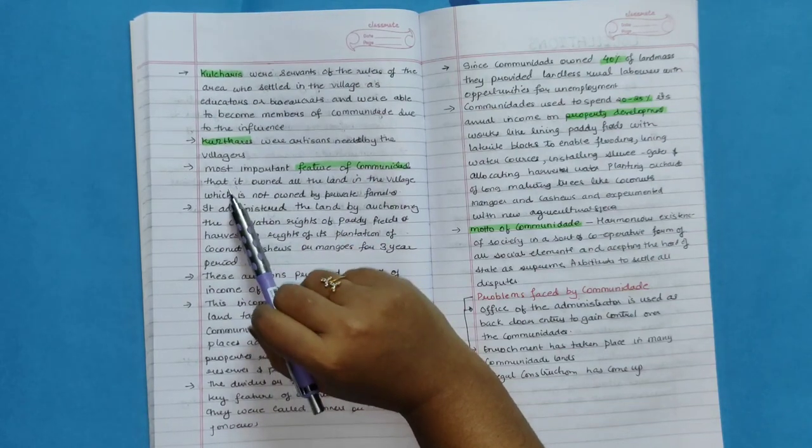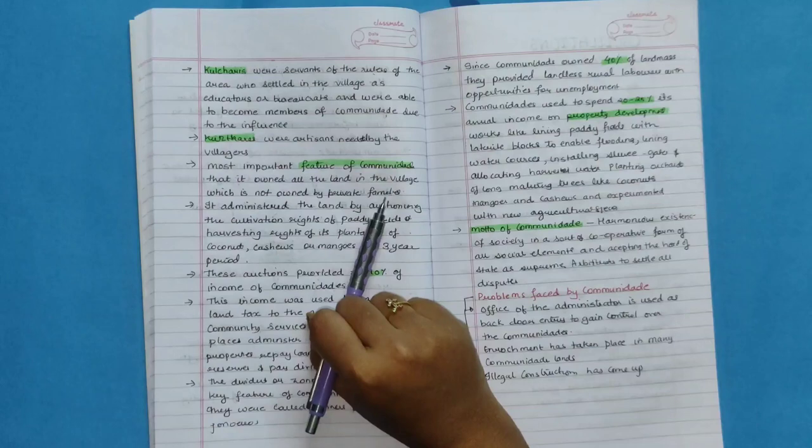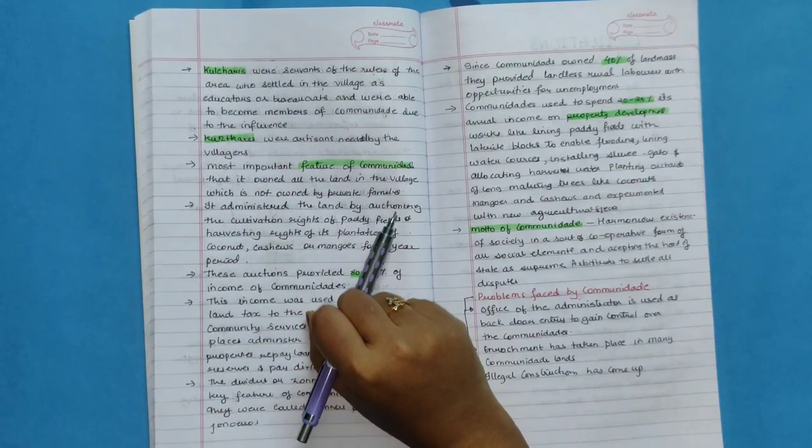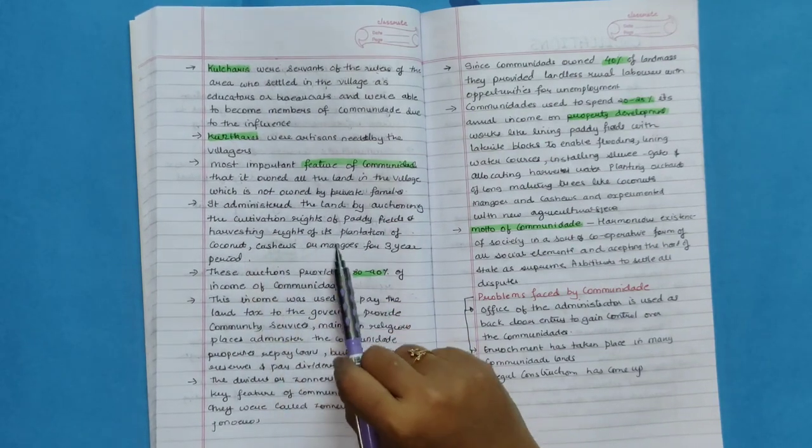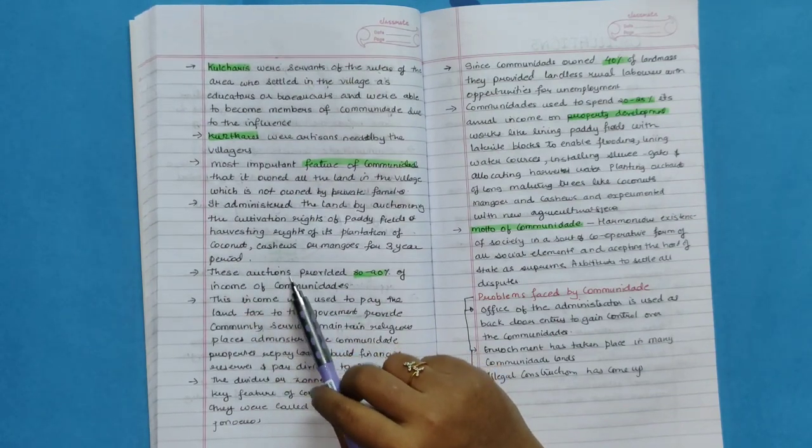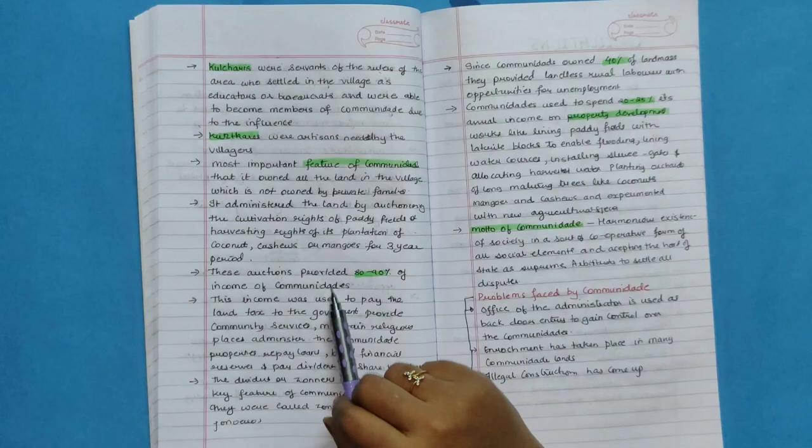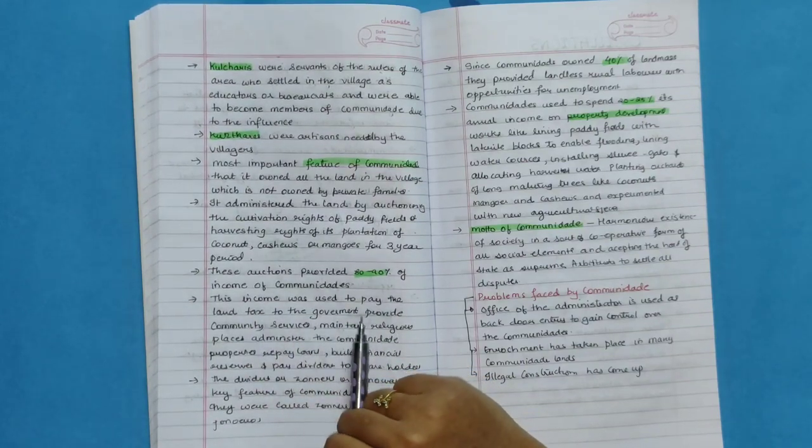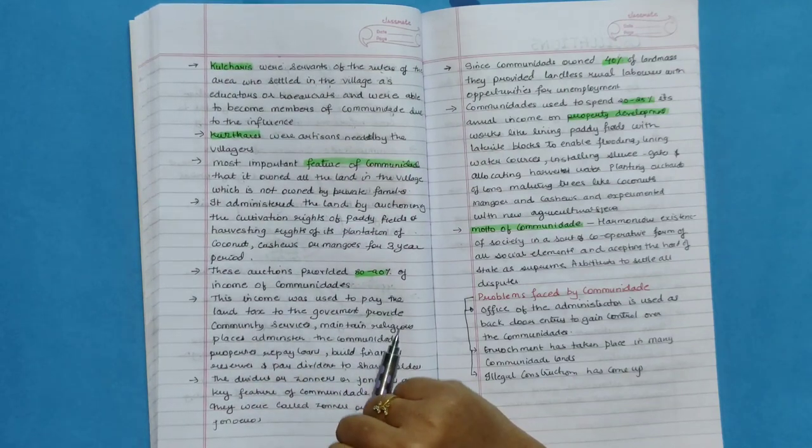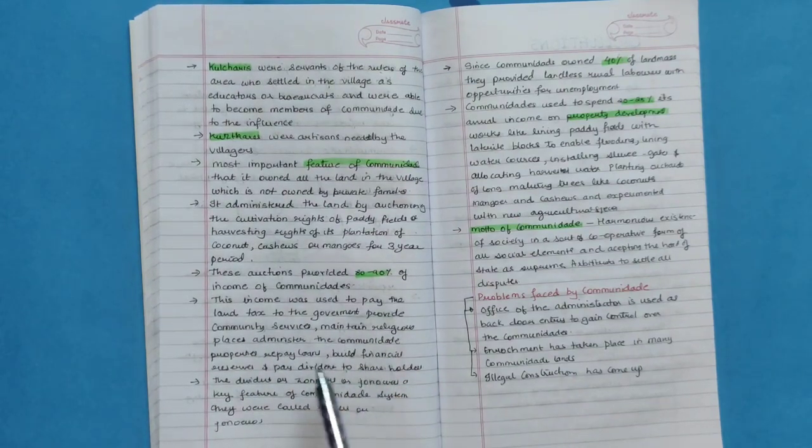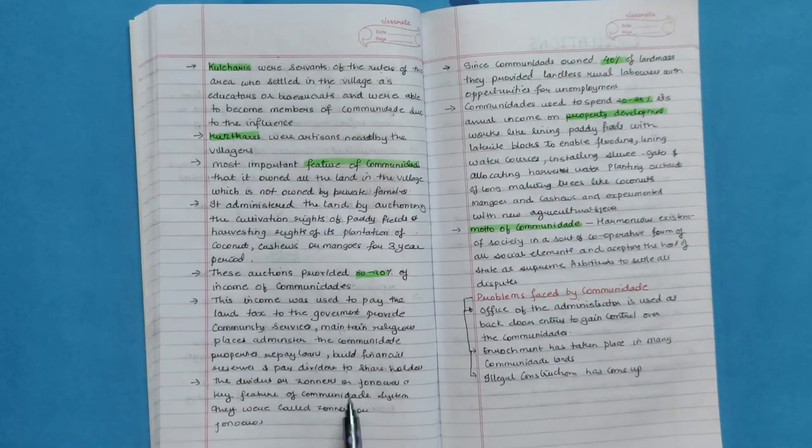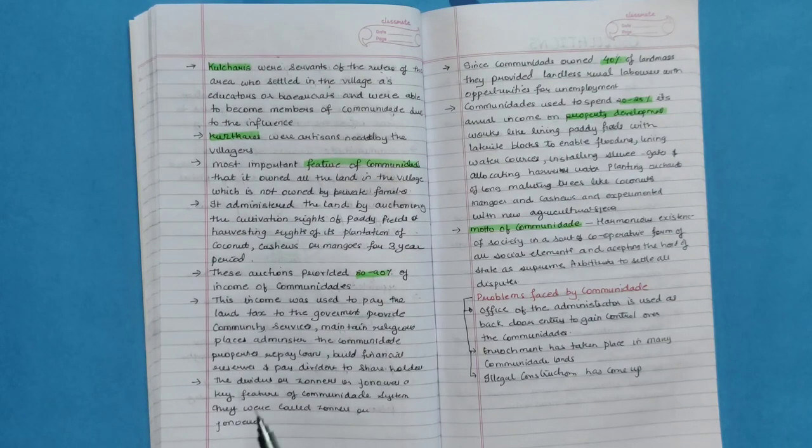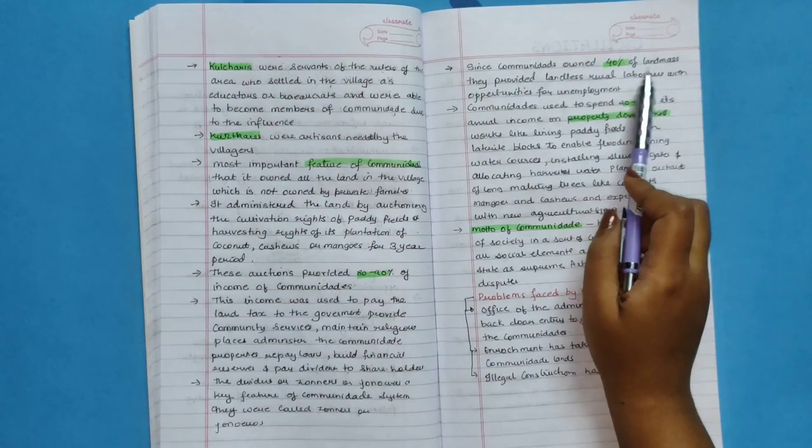Most important feature of Comunidade that it owned all the land in the village which is not owned by private families. It administered the land by auctioning the cultivation right of paddy fields or harvesting rights of its plantation of coconut, cashew or mangoes for three-year period. This auction provided 80 to 90 percent of income of Comunidade. This income was used to pay the land tax to the government, provide community service, maintain religious places, administer the community's properties, repay loan, build financial reserves, and pay dividends to shareholders. The dividends or zons of the chums was a key feature of Comunidade's system. They were called zonnaris or zonniros.